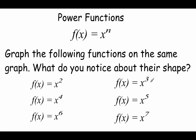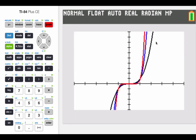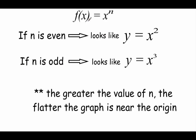Now let's look at x to the third, x to the fifth, and x to the seventh. We know x cubed gives us that cubic graph — what we've been calling the disco graph. These odd-powered functions are going to have origin symmetry, so what's going on in the top right matches what's going on in the bottom left. For f(x) = x^n, if n is even the graph looks like y = x² (a parabola); if n is odd it looks like a cubic function. Also, the greater the value of n, the flatter the graph is close to the origin.